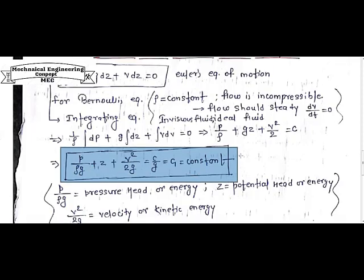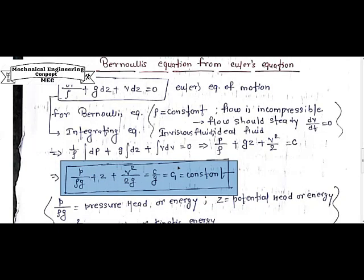This resultant equation is known as Bernoulli's equation of motion with respect to Euler equation of motion: P by rho g plus z plus v squared by 2g equals constant.